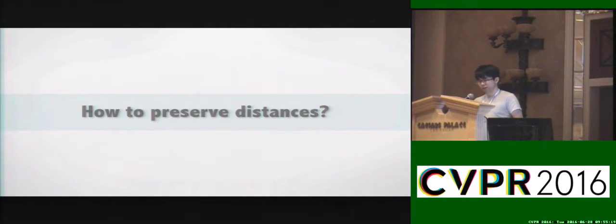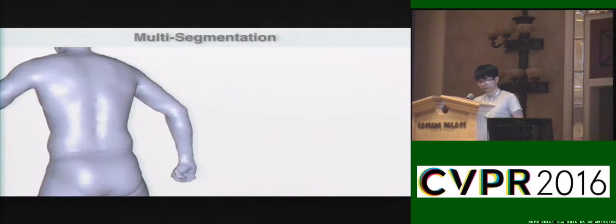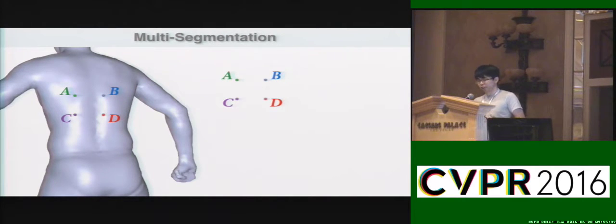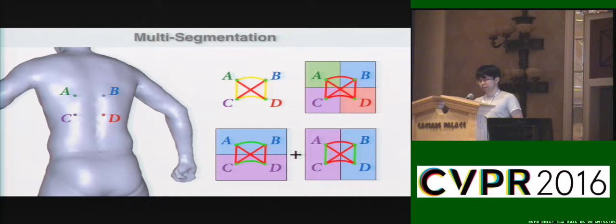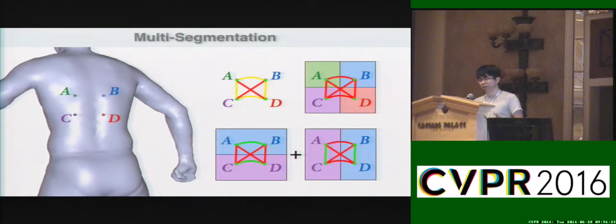How can we preserve such a distance? We propose a new multi-segmentation approach to achieve this. Consider that there are four points on the human body, and we would like to enforce the descriptor of A and B to be more similar than the descriptor between A and D, because A and B are located closer to each other on the mesh. If we simply segment it into different classes, after training it will only ensure points from different classes are far apart, and it doesn't preserve smoothness. But if we train it using two different segmentations and train the classification at the same time, A and D are located in different classes all the time, while A and B are classified into the same group 50% of the time. Therefore, after training, A and B will be more similar than A and D.